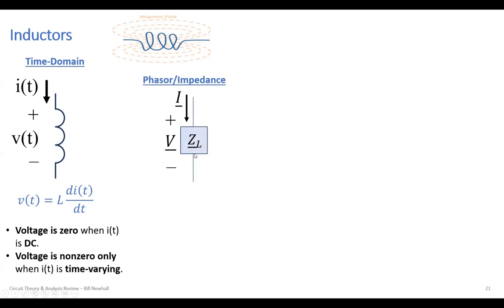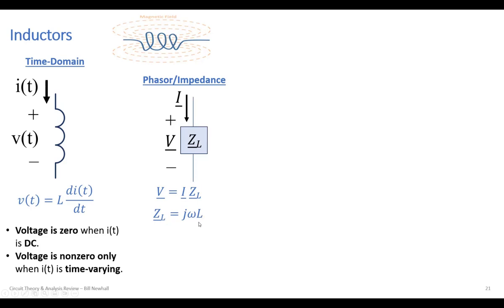You can see this more clearly if you represent the inductor with an inductive impedance. Defining phasor voltage and phasor current for the inductor Z_L, you can relate them with V = IZ, where Z is the inductive impedance. The impedance is jωL, and the magnitude of impedance increases with frequency ω.